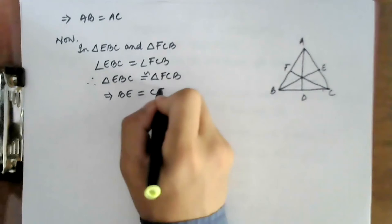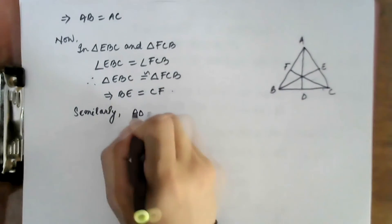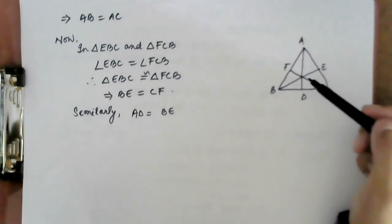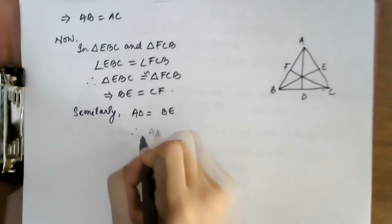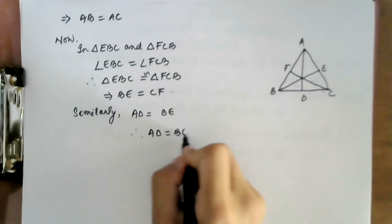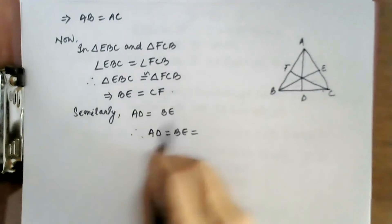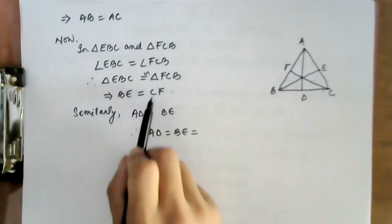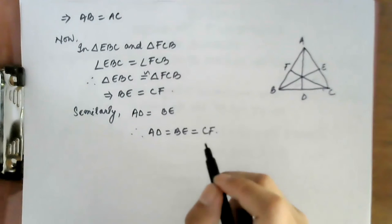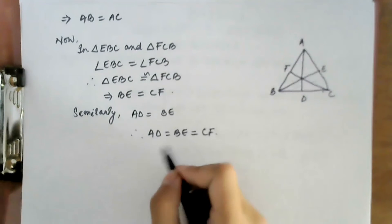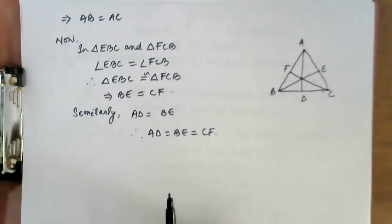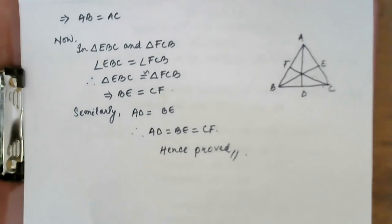Therefore, triangle EBC is congruent to triangle FCB, which implies BE = CF. Similarly, AD = BE, because both are medians. So we have AD = BE and BE = CF, therefore AD = BE = CF. All the medians of triangle ABC are equal. Hence proved.